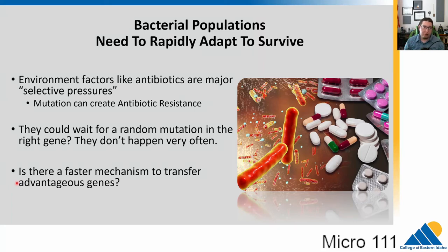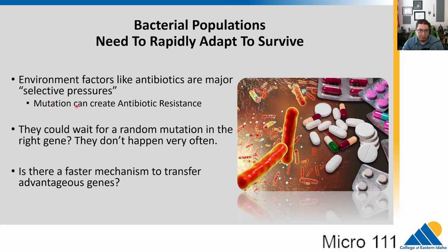In the previous section, we talked about evolution, the process of natural selection and adaptation. Bacterial populations need to rapidly adapt to survive, as their environments change quite rapidly. Things like antibiotics are major selective pressures, so mutations can create antibiotic resistance. Microbes could sit around waiting for random mutations in the right gene, but these happen incredibly rarely.